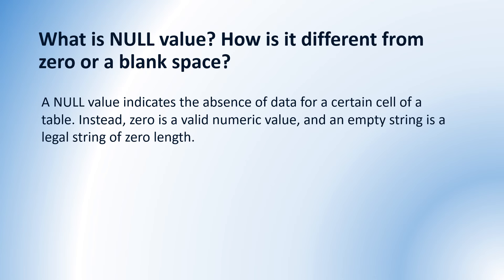What is null value and how is it different from 0 or blank space? Most people think null, 0, and blank space are the same, but they are not. Null value indicates absence of data — if we have a null value for a certain cell in a table, that indicates there is no data for that cell. But if we have 0, it is a valid numeric value and does not indicate absence of data. And if we have a blank space, it indicates an empty string of zero length, which is also a legal string — it does not indicate absence of data.